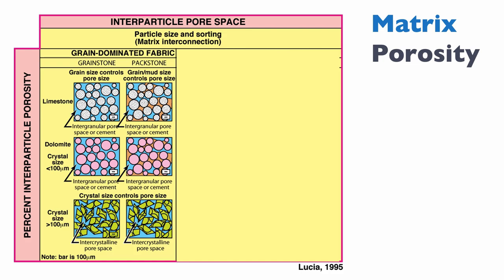He also recognizes two different types of dolomite: dolomite with crystal size smaller than 100 microns, and dolomite with crystal size larger than 100 microns. Notice again that boundary of 100 microns.